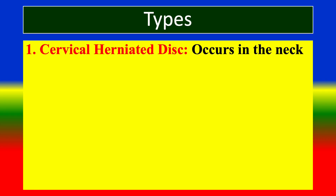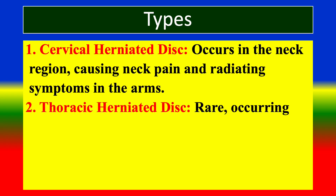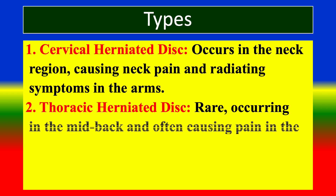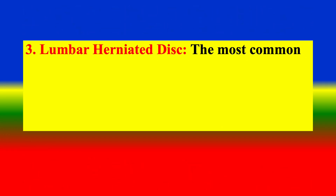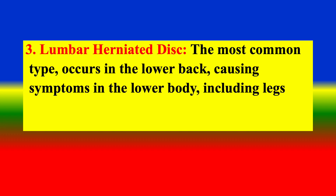Types of herniated disc: One — cervical herniated disc, occurring in the neck region, causing neck pain and radiating symptoms in the arms. Two — thoracic herniated disc, rare, occurring in the mid-back and often causing pain in the chest or abdomen. Three — lumbar herniated disc, the most common type, occurring in the lower back, causing symptoms in the lower body.